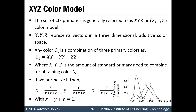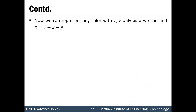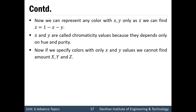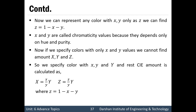Since the sum of all three components always equals 1, if you have two components, say x and y, then z can be calculated as z = 1 − x − y. So x and y are called chromaticity values because they depend on hue and purity — purely on color, not on intensity. If we specify color with only small x and y values, we cannot find the amounts X, Y, and Z. For that, we specify color with small x, small y, and capital Y. Capital X can then be calculated as X = (x / y) · Y, and similarly capital Z, where z = 1 − x − y.